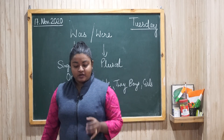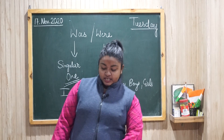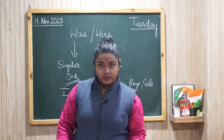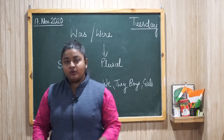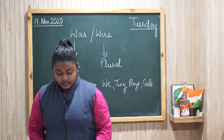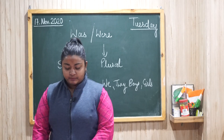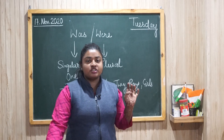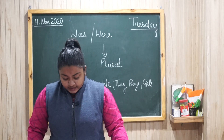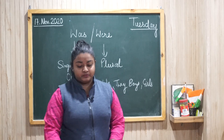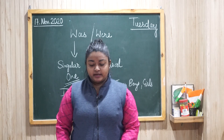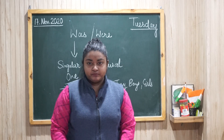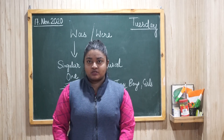We, you, they, boys, girls, Raju, Rekha — plural। जितने भी plural हैं उनके साथ were। जैसे: boys were playing chess yesterday — boys कल chess खेल रहे थे। Girls were very friendly with one another। Okay, now coming to — tick the correct answer in the words given in the sentences।